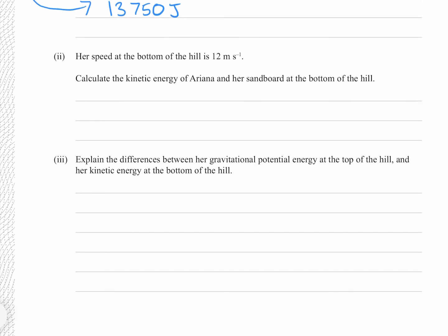Her speed at the bottom of the hill is 12 meters per second. Calculate the kinetic energy of Ariana and her sandboard at the bottom of the hill. Our equation for kinetic energy is half mv squared, where we know our mass is our 55 kilograms and our velocity is 12, which gives me 3960 joules.